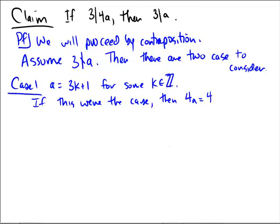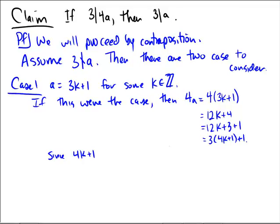4 times a would be equal to 4 times 3k plus 1, which would be equal to 12k plus 4, which is 12k plus 3 plus 1, which is 3 times 4k plus 1 plus 1. Since 4k plus 1 is an integer, we see that 3 would not divide into 4a.